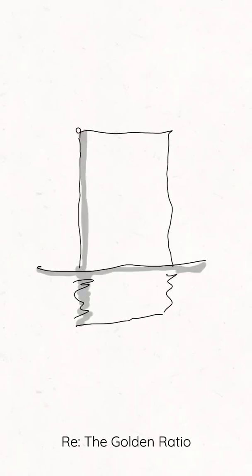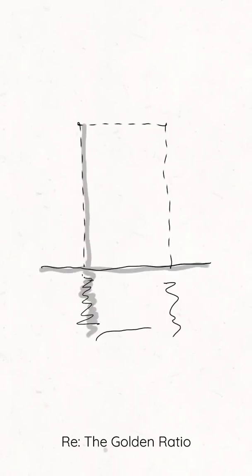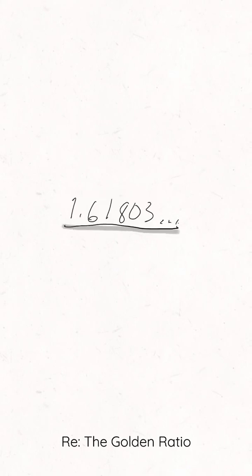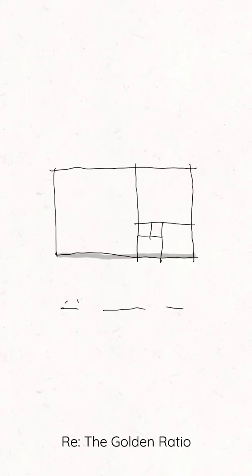The golden ratio is real but also mythical. It's a mathematical formula found in nature that we found and it's calculated in architecture, art, and design from all ages.